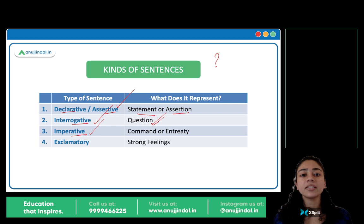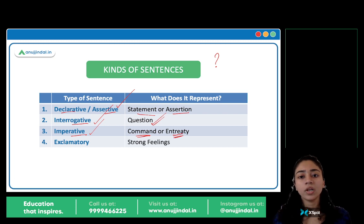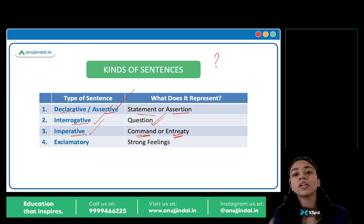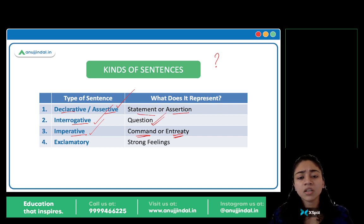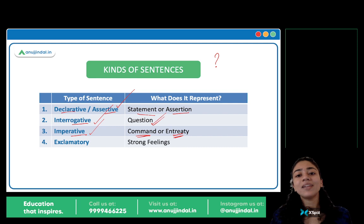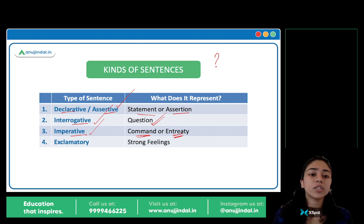Imperative sentences — any sentence which includes a command or entreaty. You are making a command, giving an order, making a request. An entreaty is a humble request — you are pleading someone: please have mercy on us, please let me go. So command, entreaty, request, order — these sentences are called imperative sentences.